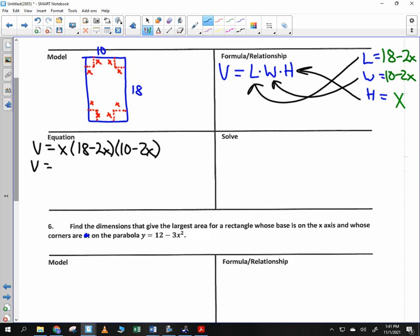Negative 2x times negative 2x, times x. 4x cubed. Sweet. Negative 2x times 10 and negative 2x times 18. Well, negative 2x times 10, that's negative 20x. And then negative 2x times 18 is negative 36x. Negative 56x times x is negative 56x squared. Now we've got to do the 18 times 10. What's 18 times 10? Times x is 180x.